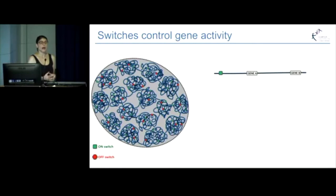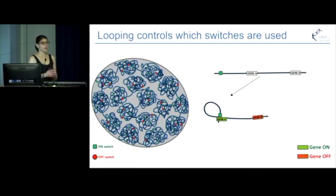They work by making physical contact with the genes. If DNA is linear, no contacts can be made. But we know that it's looped within the cell and it can give rise to structures such as this. Here we see that on switch coming into contact with gene A and switching its expression on, but not coming into contact with gene B.